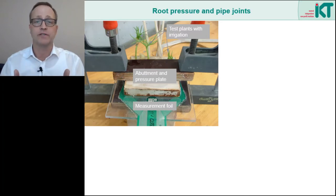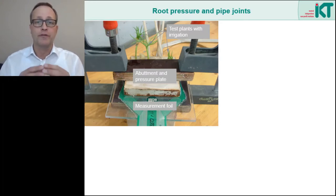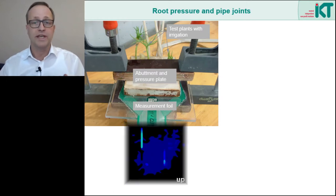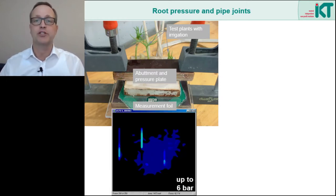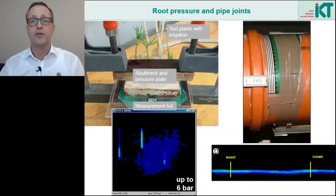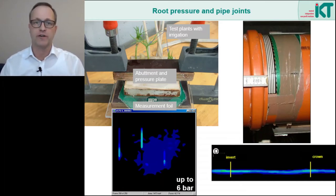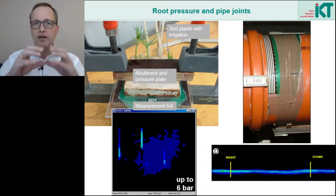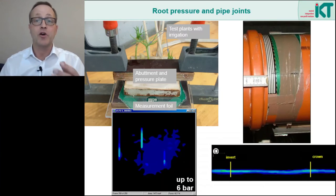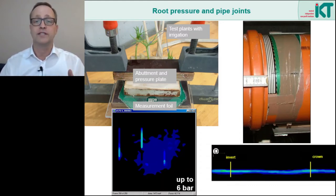A root can grow into a tight joint — unfortunately, our measurements confirmed that. In the experimental setup, we let roots of experimental plants grow against a pressure plate and measured the pressure of the roots. Many plants can easily exert a pressure of 6 bar or even more — we have measured up to 11 bar in some extreme cases. To compare this with the performance of typical pipe joints, we applied the same pressure measurement foils to the spigot end of socket joints, pushed the pipes together, and measured the pressure of the seal. Especially when the pipe joint is under shear loads, there are quickly areas with low pressure through which a root can grow in. So we see that it is not easy to make an absolutely root-resistant pipe joint.